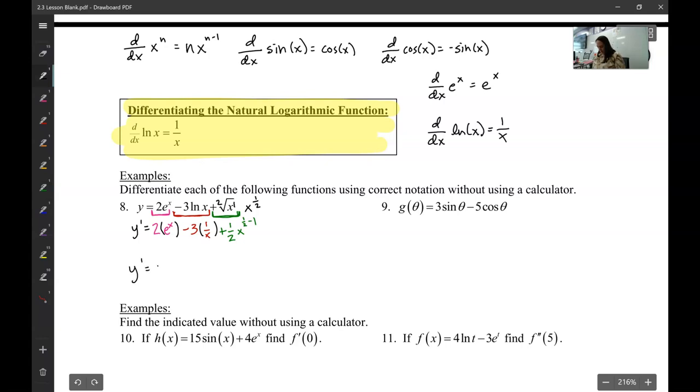So y prime is going to be 2 e to the x minus, I could write it as 3 times 1 over x. Or I could write it like that. Plus one half x to the negative one half. Now, you can simplify that further by bringing it into the denominator, making it positive, whatever. But remember, you don't need to simplify. This is AP calculus. So there you go.